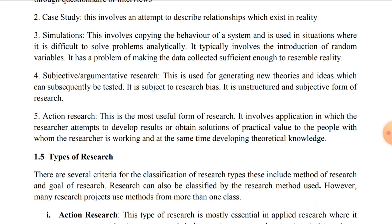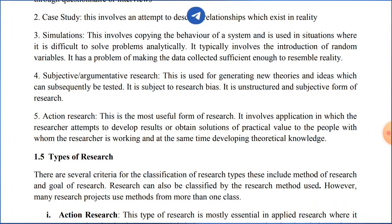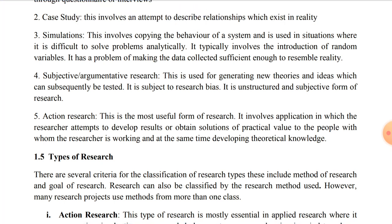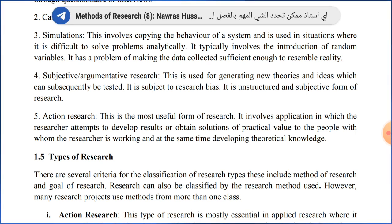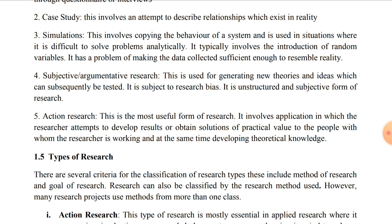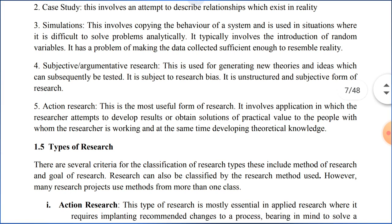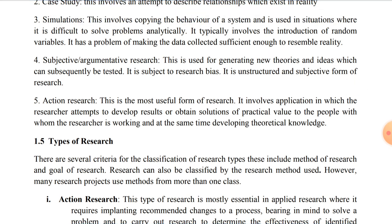Subjective or argumentative research: this is used for generating new theories and ideas which can subsequently be tested. It is subject to research bias. When you want to make research about new theories or ideas, you suppose something new. But your theories will be subject to critics and to bias — the researcher makes a great effort to complete a new theory, after which other researchers will criticize and test those theories.